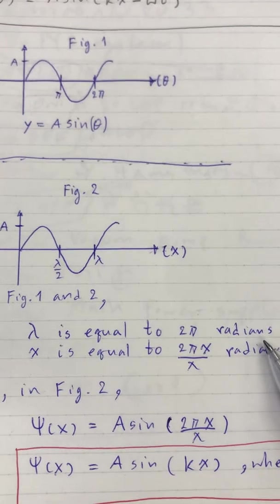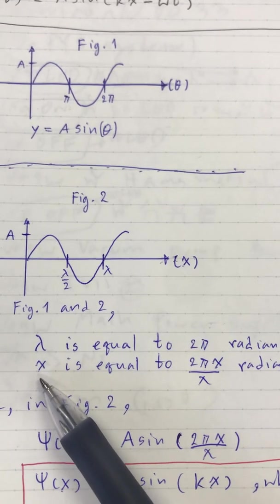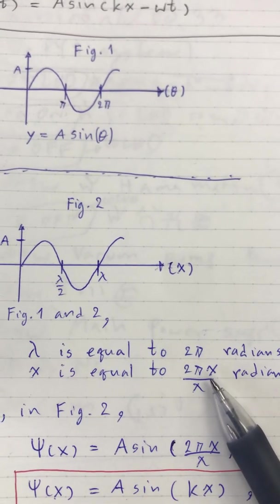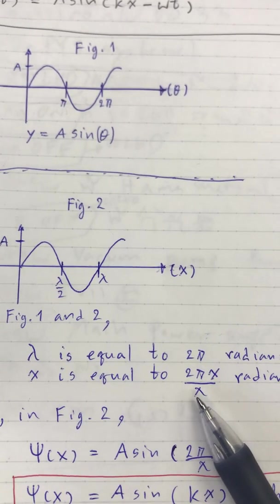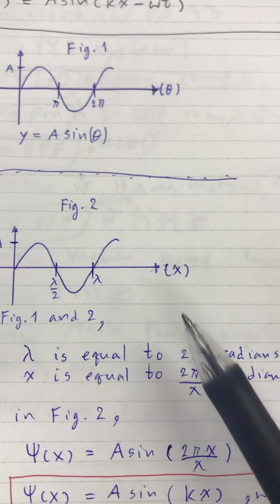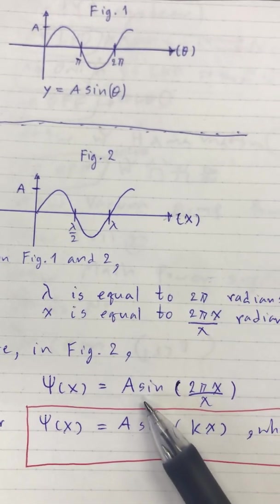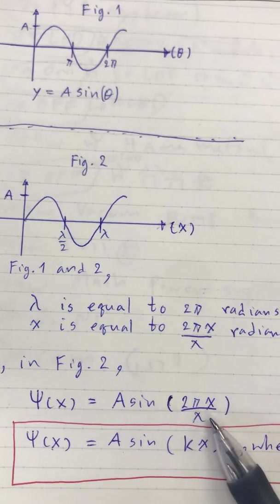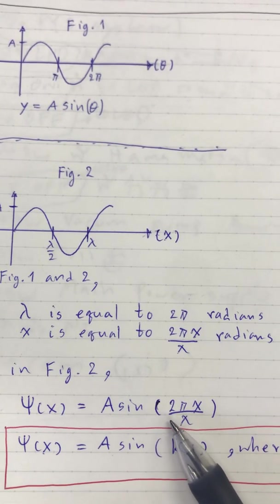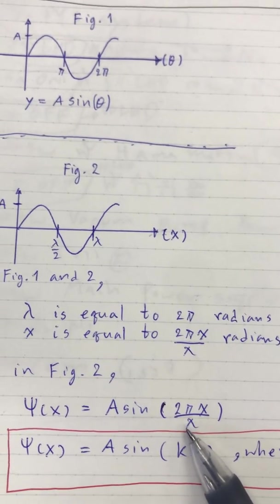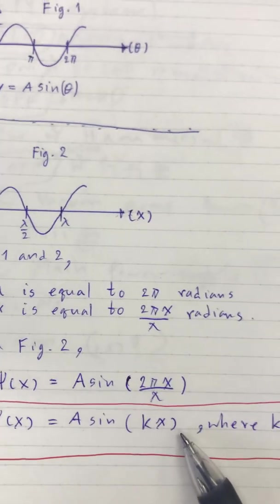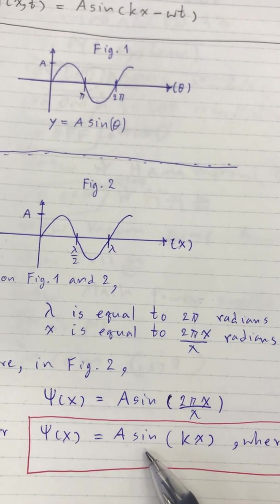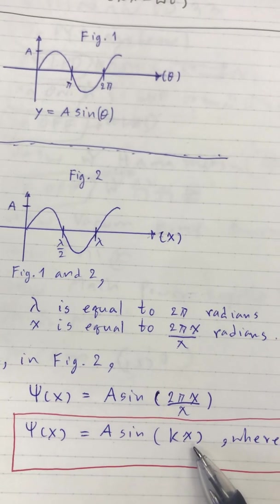By comparing Figures 1 and 2, if the distance lambda equals 2π radians, then at any position x in Figure 2, the angle in radians equals 2π multiplied by x divided by lambda. We can therefore write the sine function as a function of distance x. The term 2π over lambda is the wave number k, giving us the sine function as a function of distance in one dimension.